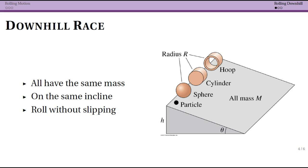Let's now look at a situation that the book goes through because this is really helpful in understanding the situation. This is the idea of now having a downhill race between four different objects where each object has the same mass and they're on the same incline.